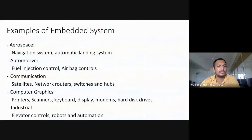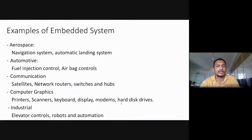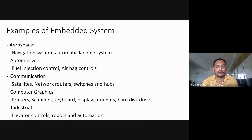Next are examples of embedded systems. In aerospace: navigation systems and automatic landing systems. In automotive: fuel injection control and airbag control. In communication: satellites, network routers, switches, and hubs. In computer graphics: printers, scanners, keyboard, display, modem, and hard disk drives. In industrial applications: elevator controls, robots, and automation. In home: dishwashers, microwave ovens, VCRs, televisions, stereos, alarm systems, answering machines, and automatic washing machines.